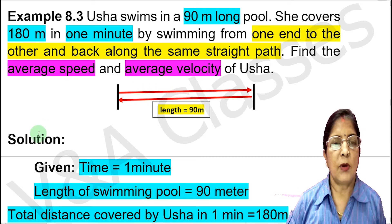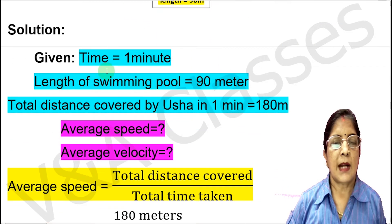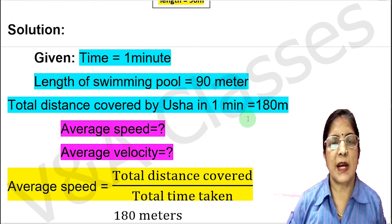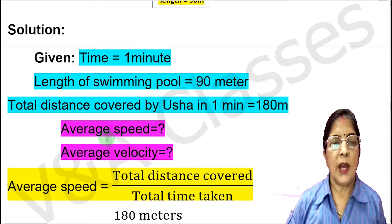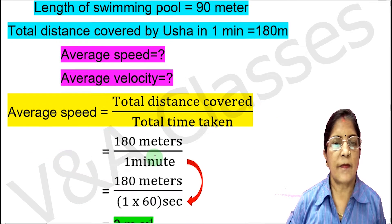Now we start with the solution. Time equals 1 minute. Length of the swimming pool equals 90 meters. Total distance covered by Ursa in 1 minute equals 180 meters. We will find average speed and average velocity.